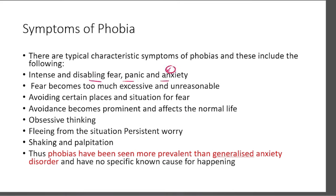In your fear, it develops a lot and prevents you from doing what you want to do. If someone has aquaphobia, which we also call hydrophobia, then they don't go near swimming pools or lakes. Fear becomes excessive and unreasonable. Avoiding certain places and situations for fear — for example, fear of heights, mountains, cliffs, etc. Avoidance becomes prominent and affects normal life.